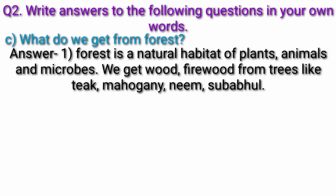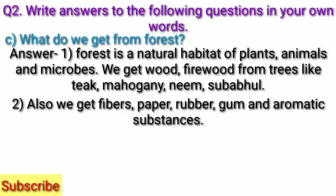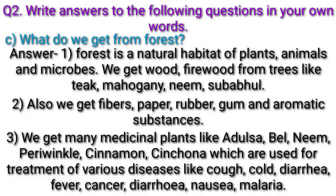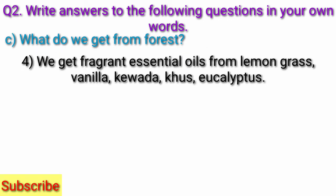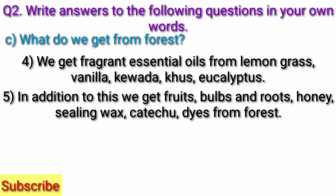Question c) What do we get from forests? Answer: A forest is a natural habitat of plants, animals, and microbes. We get wood and firewood from trees like teak, mahogany, neem, and subabhul. We also get fibers, pepper, rubber, gum, and aromatic substances. We get many medicinal plants like adulsa, bell, neem, periwinkle, cinnamon, and cinchona, which are used for treatment of various diseases like cough, cold, diarrhea, fever, cancer, nausea, and malaria. We get fragrant essential oils from lemongrass, vanilla, and kewada, and also fruits, bulbs, roots, honey, sealing wax, and dyes from forests.